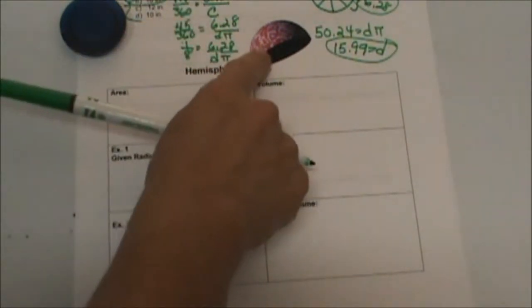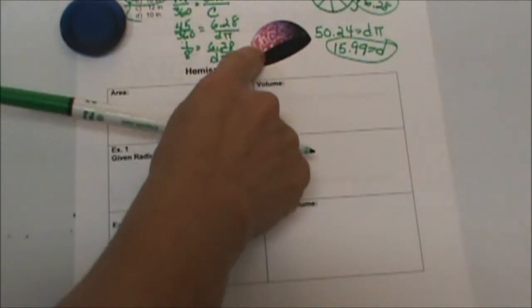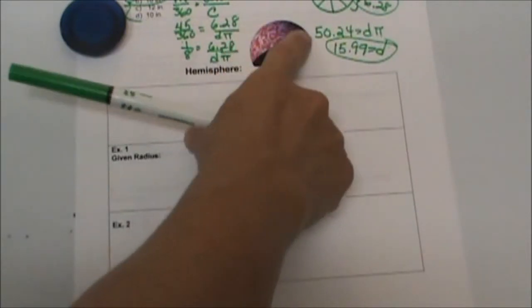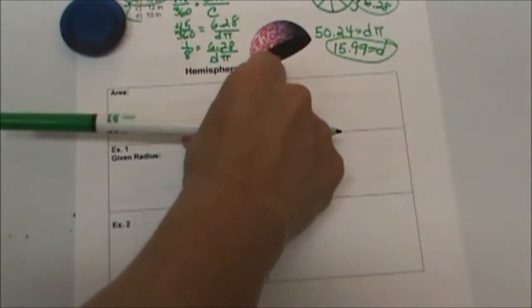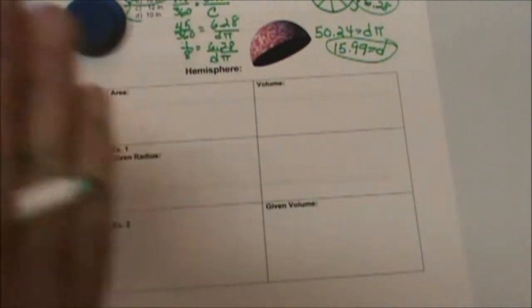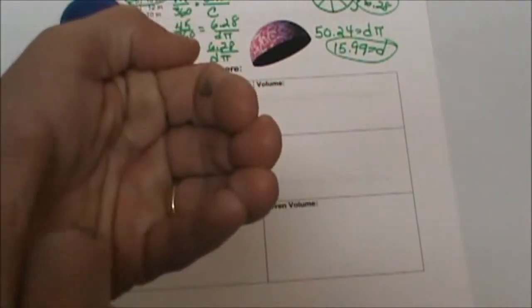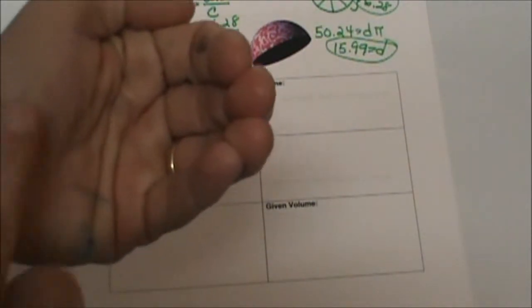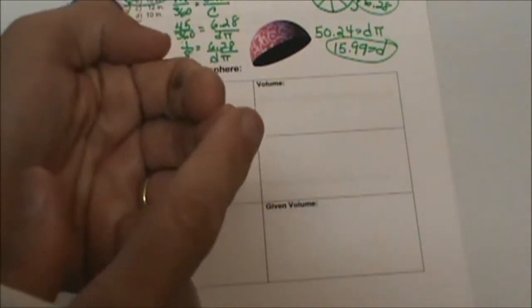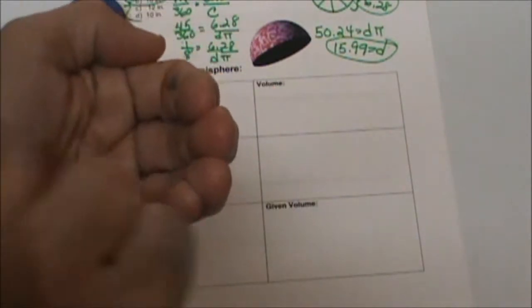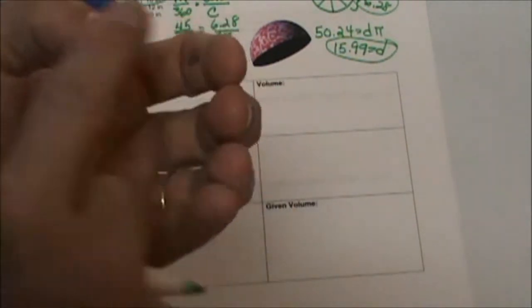So when you're finding the surface area of a hemisphere, you not only count the curved part, but you also have to count that flat part. Well, what's the flat part on a hemisphere or on an orange? It's the great circle. So guess what the area of a great circle is? Pi r squared. It's just the area of a circle in relation to that sphere, right? It's just a round curve.